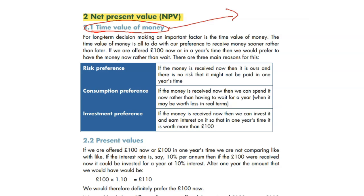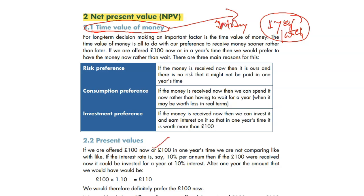Money has a time value. One pound today is not the same as one pound one year later. For example, if you have a hundred pounds today and one year later, it's not the same. Because if you invest this hundred pounds somewhere and you get a 10% return, one year later it's going to be a hundred and ten pounds.